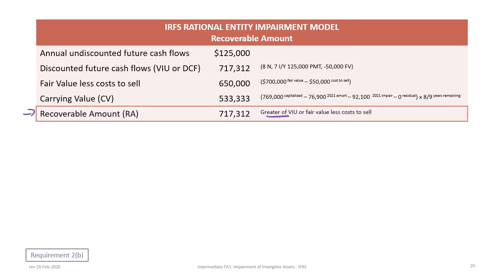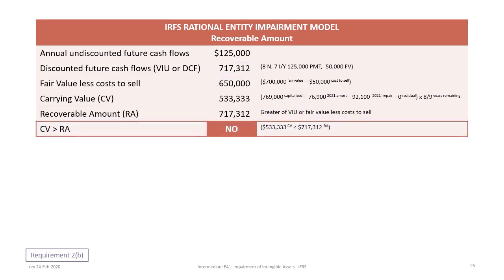The recoverable amount is again the greater of value in use or fair value less cost to sell. The discounted future cash flows of $717,312 exceed the fair value less cost to sell of $650,000, so the recoverable amount is $717,312. Comparing carrying value to recoverable amount, $533,333 is less than $717,312, so the carrying value is not greater than the recoverable amount.